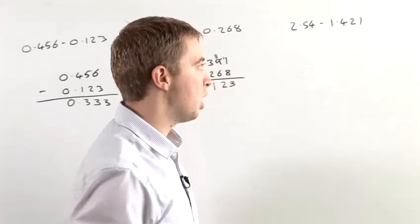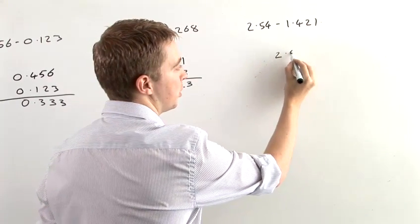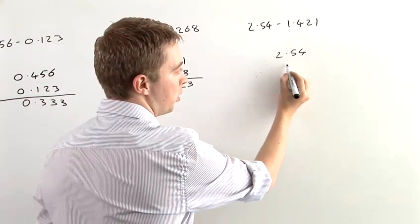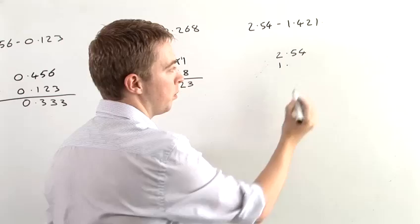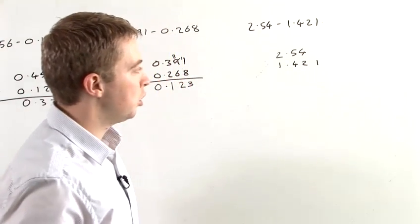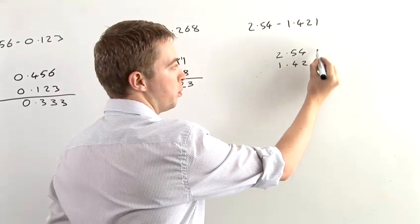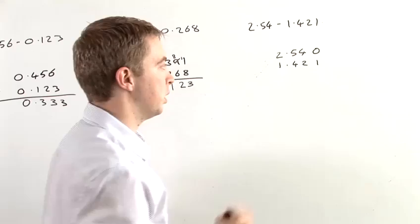So now we're going to look at another example, which again, we'll have a little extra step in. So again, make sure we put the point underneath the point in the top number. And now we have 4, 2, 1. You'll see that there's a space up here. And so what you should do there is just put a 0 in, just to complete the sum.